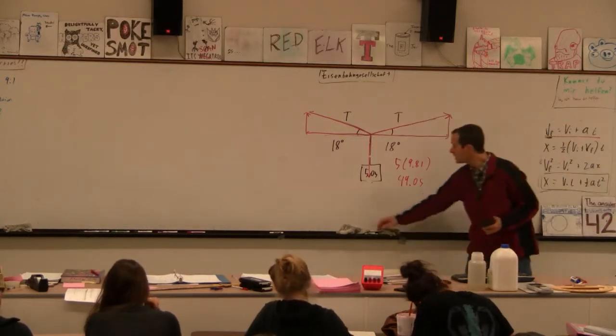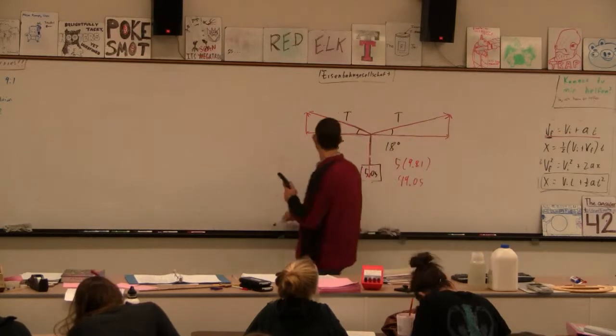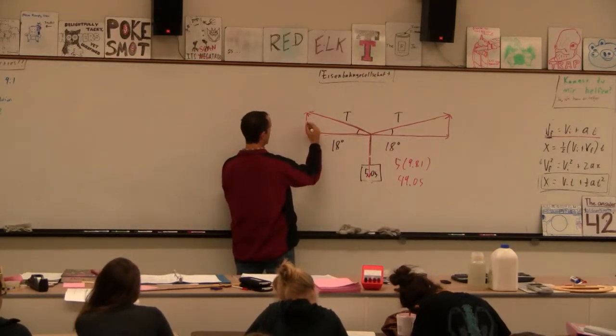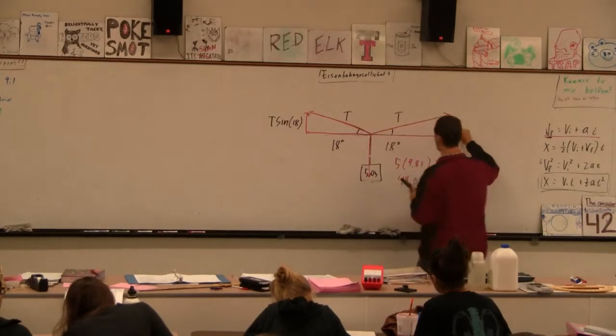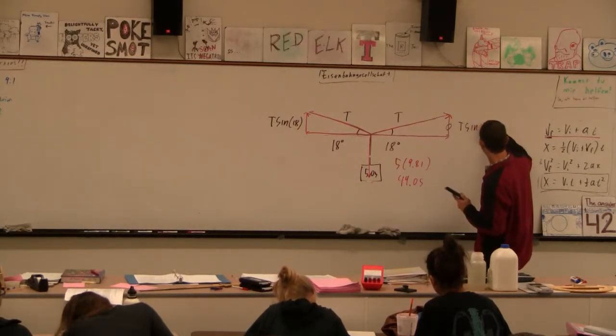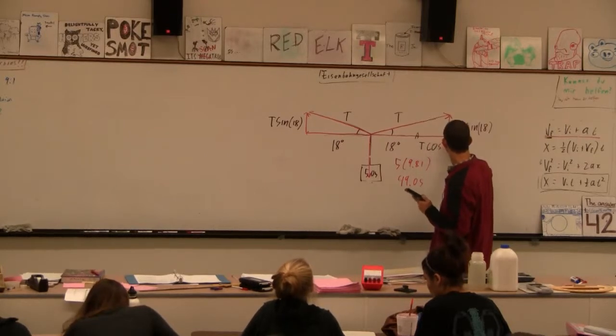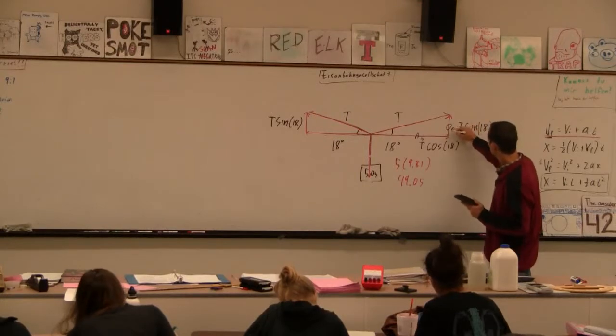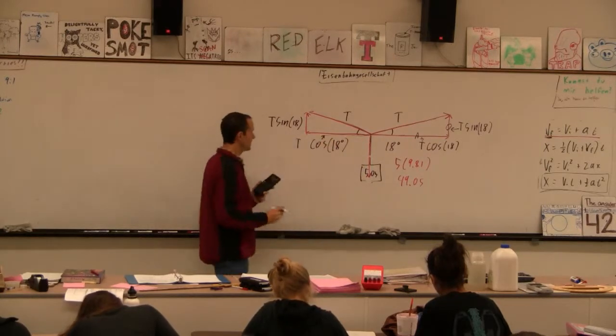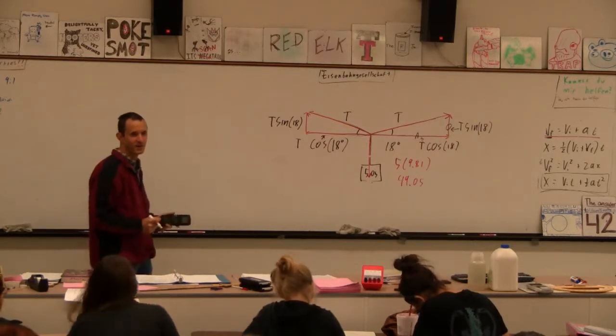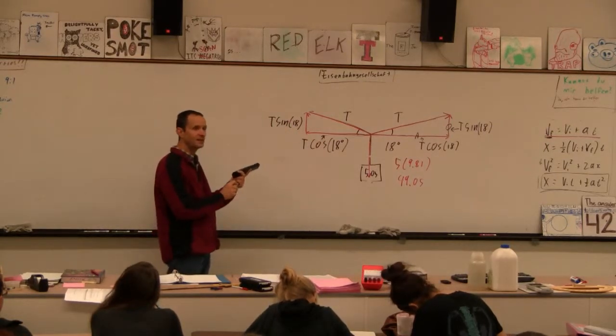And then these sideways ones, they have to be equal but opposite. So there's strong symmetry here. So then, didn't it say to express the components? Since we don't know what T is, we have to just write the components in terms of T. So this side here is opposite the 18-degree angle, so this is going to be T sine 18. And this side is also the side opposite, so it's going to be T sine 18. And then this is the adjacent side to the angle, so it's going to be T cos 18.